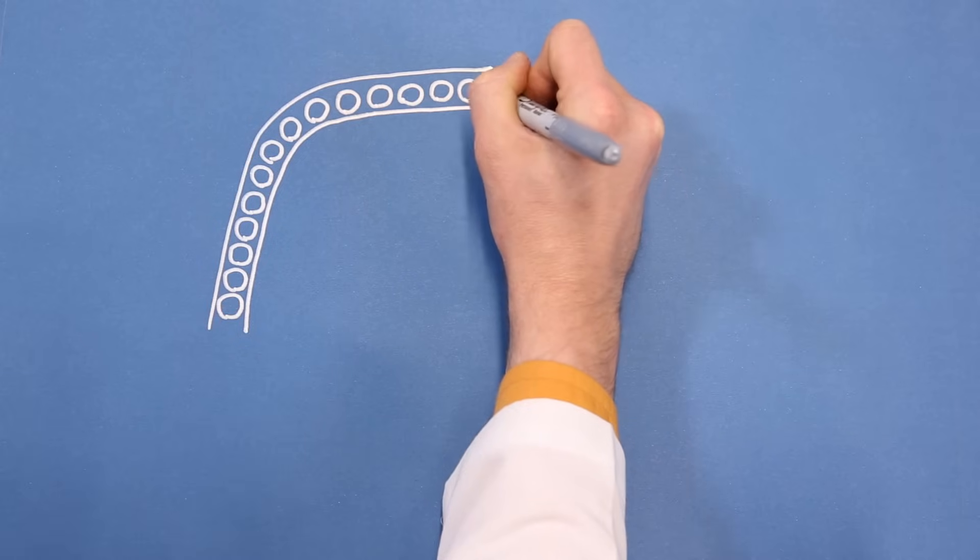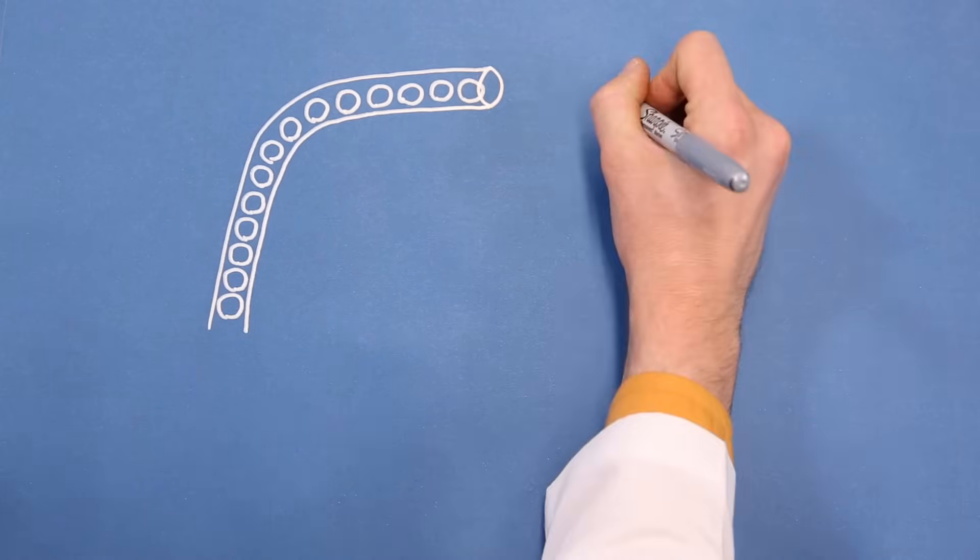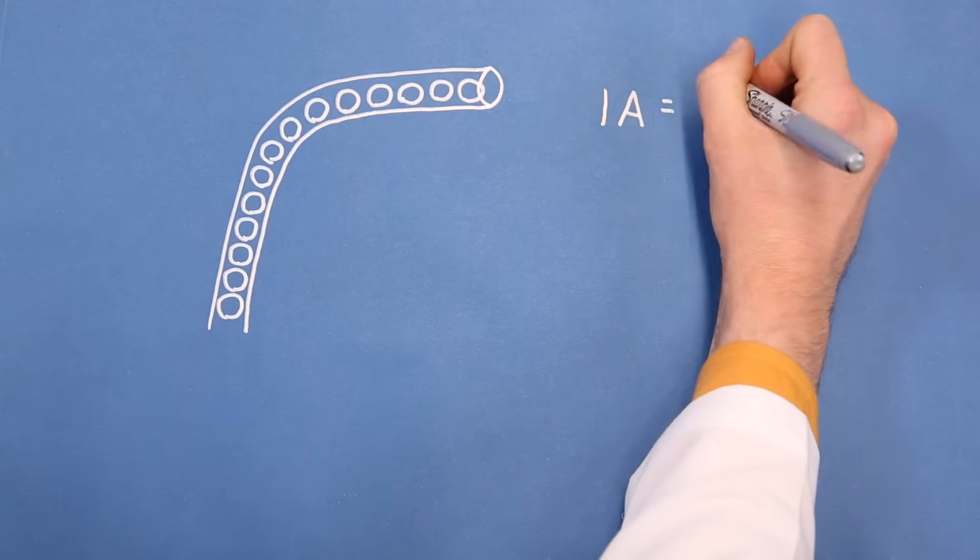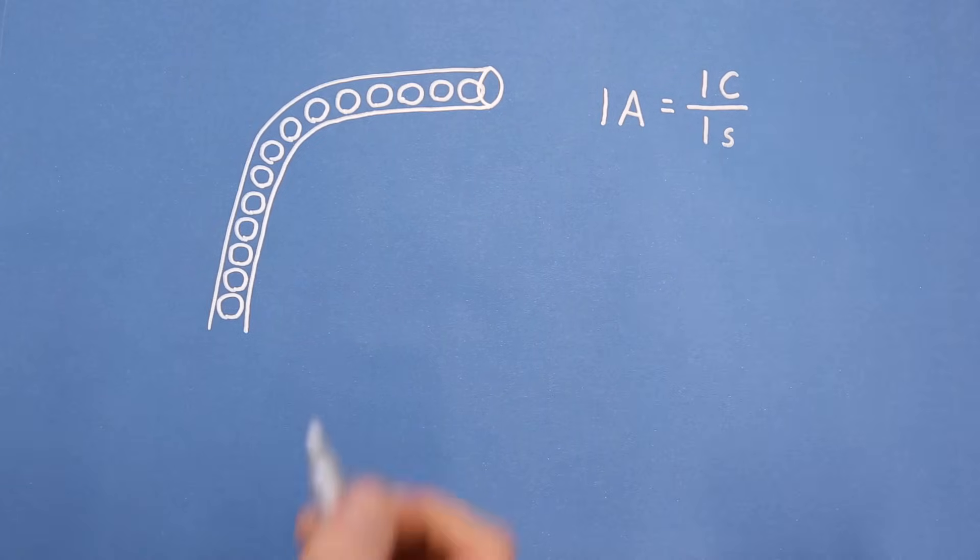In most circuits, this is accomplished by moving electrons. The unit for measuring current is the ampere, which is often abbreviated as amps and written with a capital A. One ampere is defined as one coulomb of charge moving past a point per second.